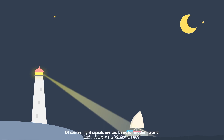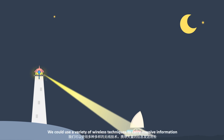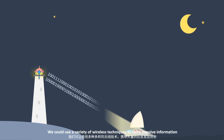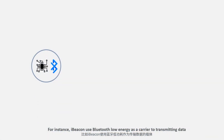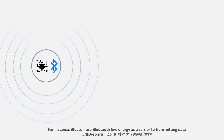Of course, light signals are too physical for the modern world. We could use a variety of wireless technologies to carry much more information. For instance, iBeacon uses Bluetooth Low Energy as a carrier to transmit data.